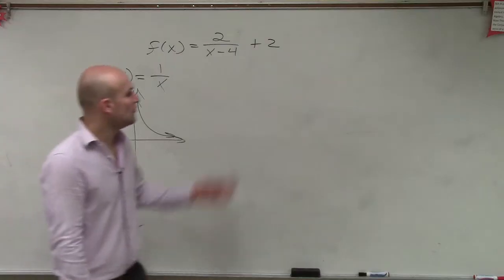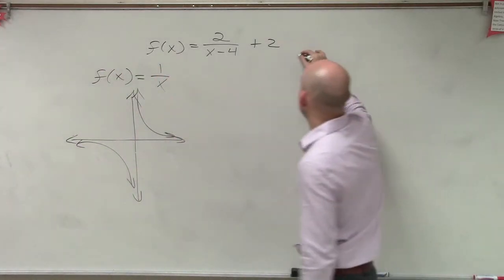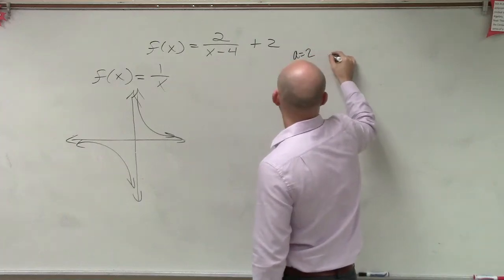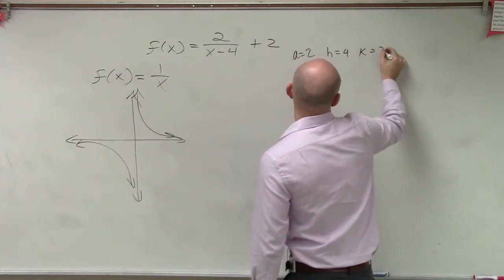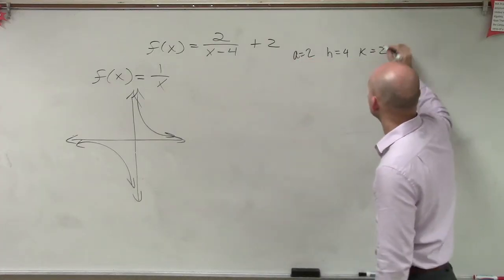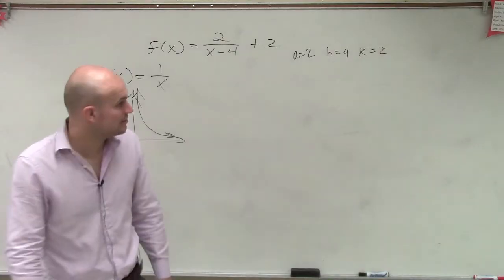Now we look at our transformation and say, all right, what's happening? We now have a equals 2, h equals 4, and k equals 2. Remember, it's a opposite of h. So h equals 4.